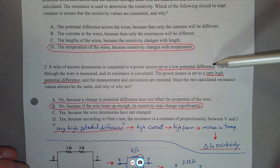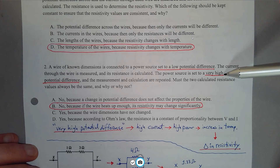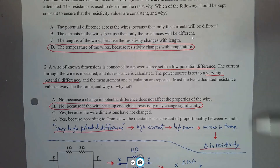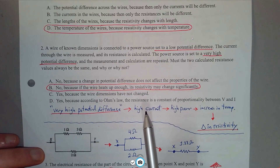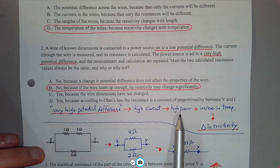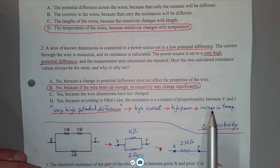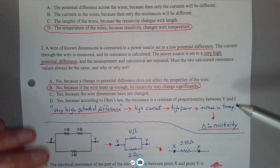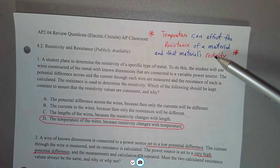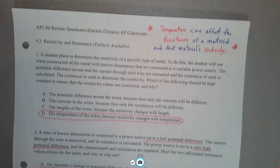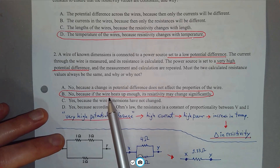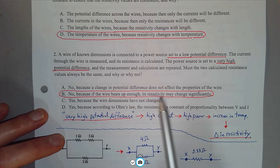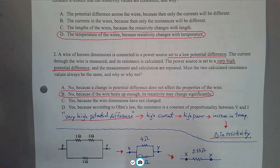Must the two calculated resistance values always be the same, and why or why not? In the first case they use a low potential; in the second case, a high potential. A very high potential difference causes a very high current. If there's a high current going through a resistor, there's a lot of energy dissipated — joules per second transferred to the environment through heat. If there's high power, the resistor increases in temperature. As we discussed, increased temperature can affect the resistance of a material, which is related to resistivity. So the two values are not necessarily the same, because if the wire heats up enough, its resistivity may change significantly, giving two different calculated resistance values for that same resistor.